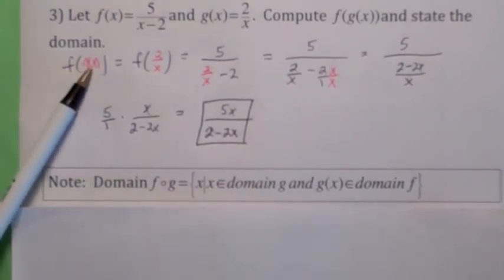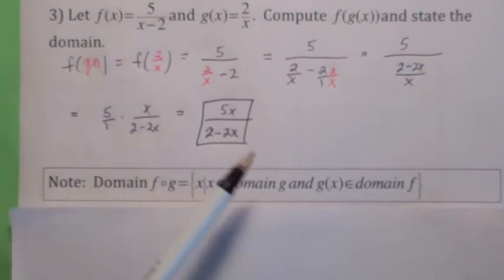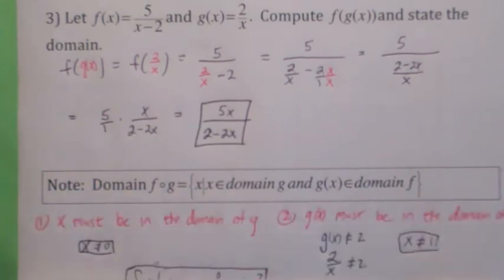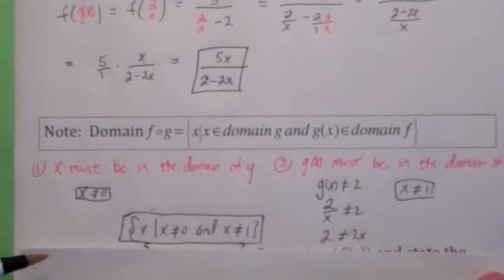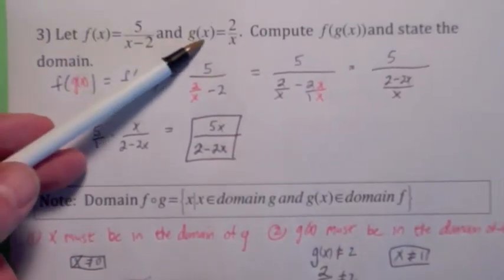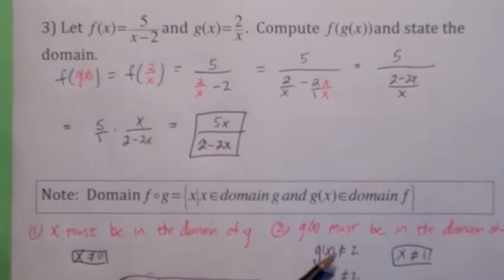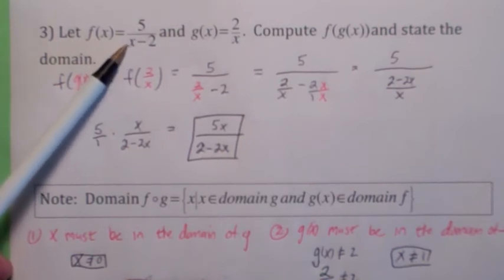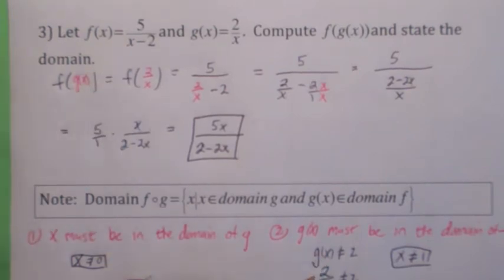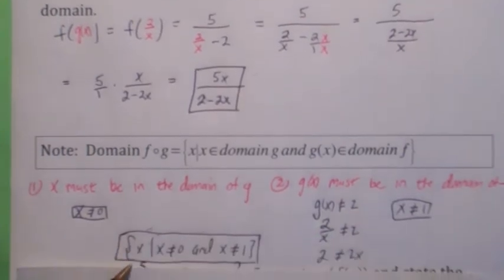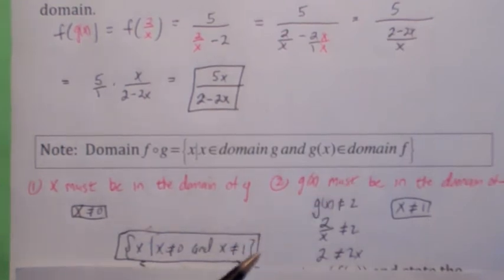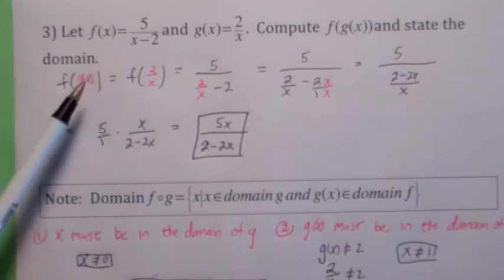But it's worse than that. Suppose you can compute g of x, but when you go to plug g of x into f of x, g of x might not be in the domain of the outside function. I'm not saying x has to be in the domain of the outside function — I'm saying g of x has to be in the domain of the outside function. The denominator of the outside function cannot equal 0, so g of x can't equal 2. g of x is 2 over x, which cannot equal 2. When you cross multiply and solve for x, that means x cannot equal 1. So you ruled out 0 because it wasn't in the domain of the inside function, and you ruled out 1 because it would have made g of x equal to 2, putting it outside the domain of the outside function.